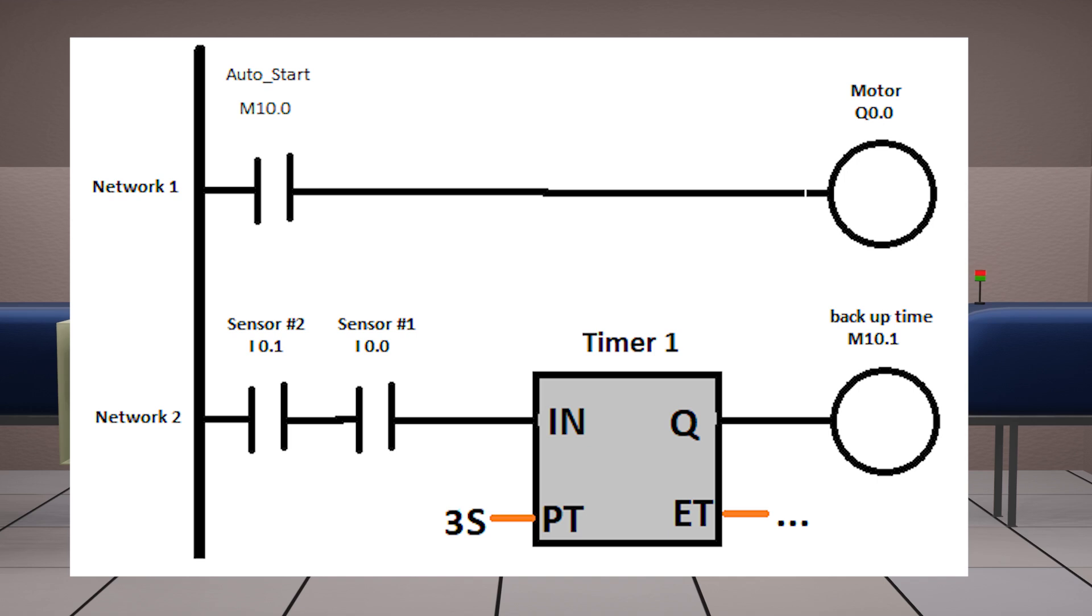Once timer 1 is over, this will turn on backup timer bit M 10.1. We can insert this bit as a normal close contact in network 1, and this will stop the conveyor motor Q 0.0 once the conveyor belt is full.